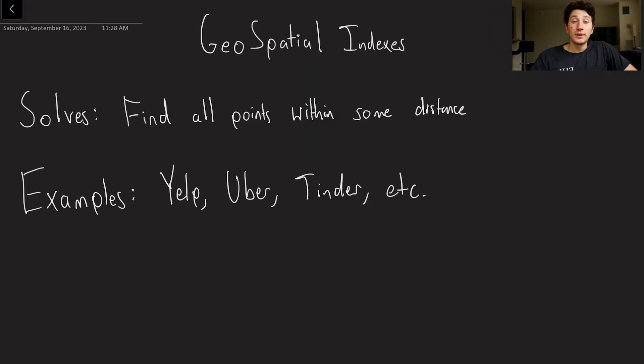So let's get into the video and I'll start explaining things. What does something like a geospatial index allow us to solve? What type of problems are we going to have to bring this up for? Well, the main ones that I'm thinking of here are things like Yelp, Uber, Tinder, etc.